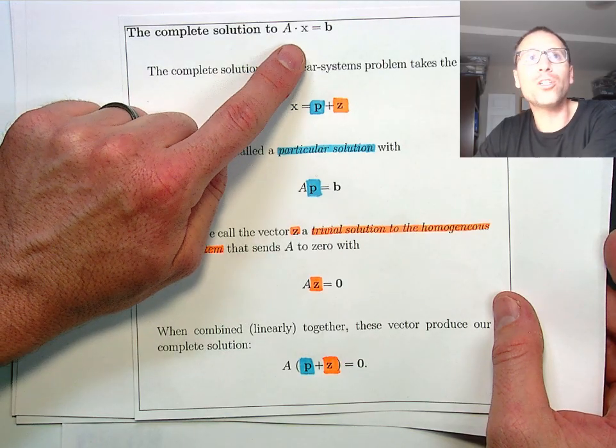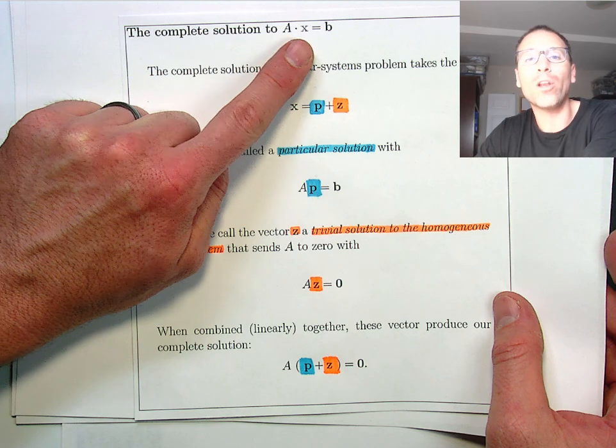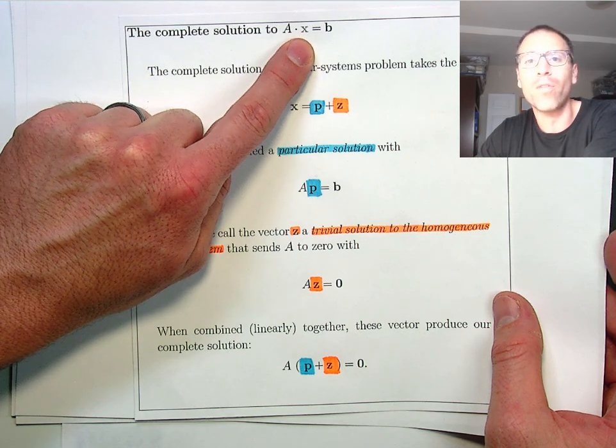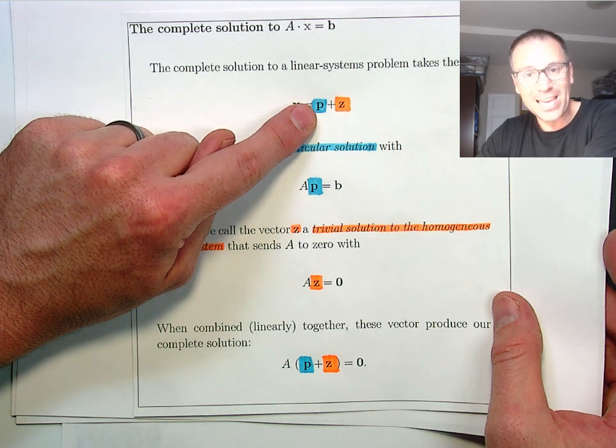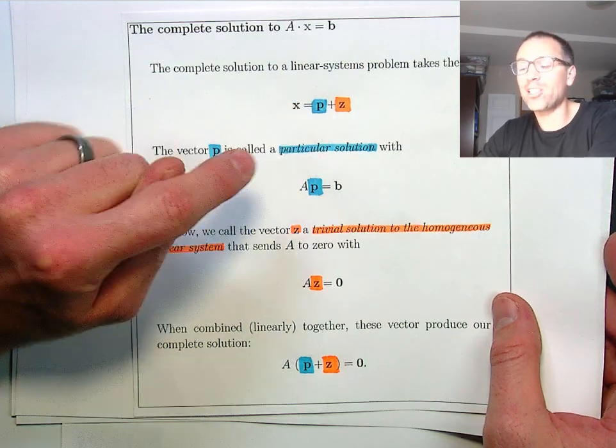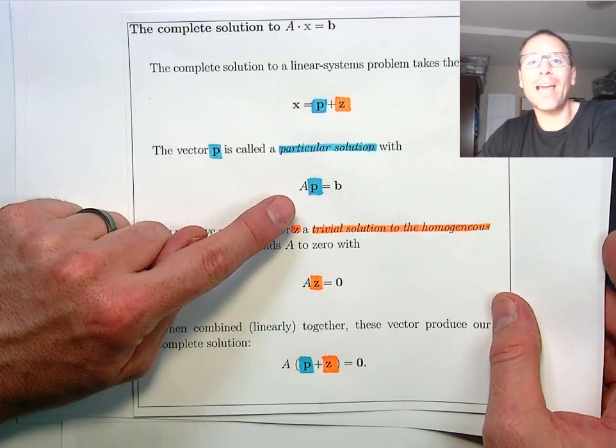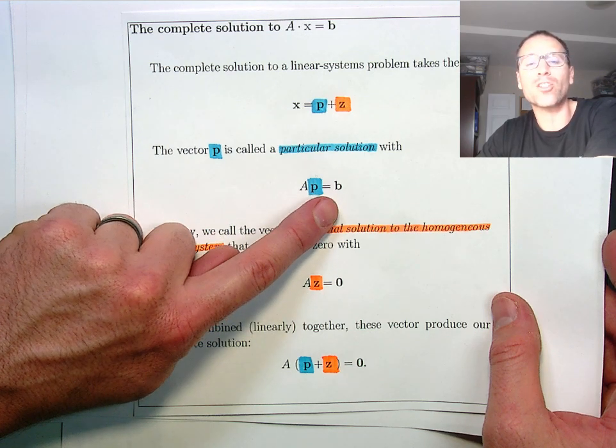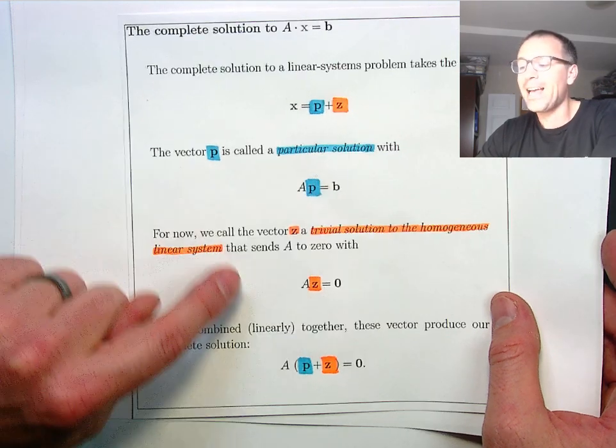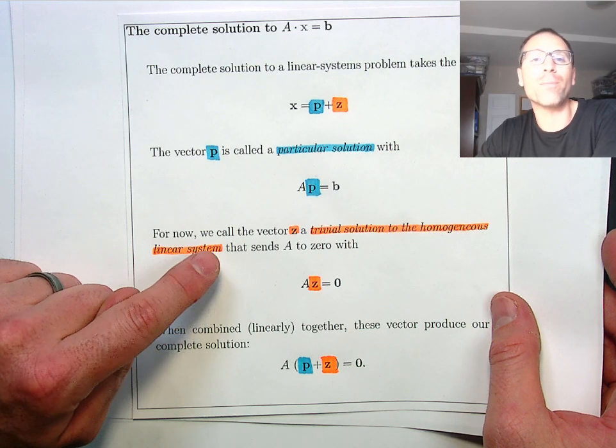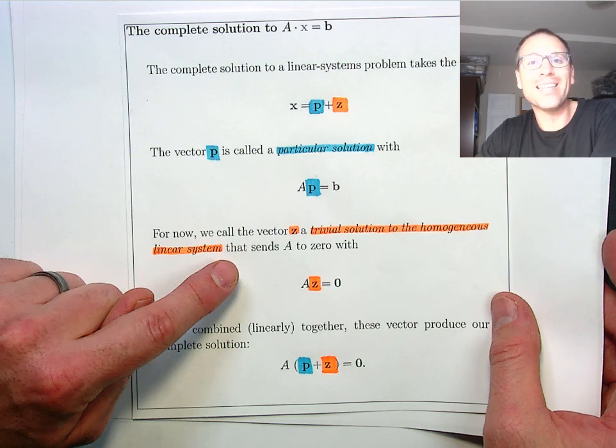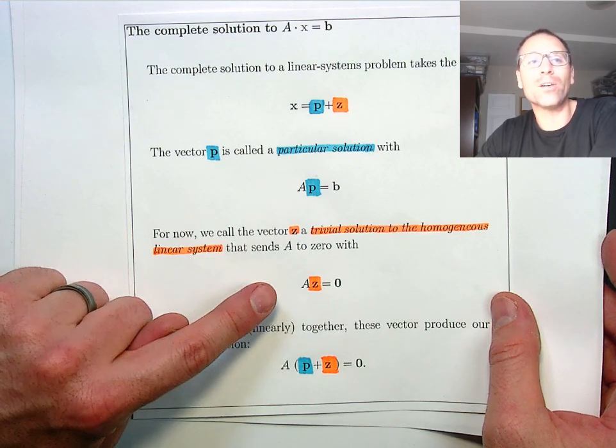When looking for the complete solution to Ax equals b, when looking for all x values that solve that, those x's are going to look like a sum p plus z. p is called a particular solution. When I multiply A by p, I get the exact b that I started with on the right hand side. z is called a trivial solution to a homogeneous linear systems problem involving the matrix A, which means A sends z to 0.